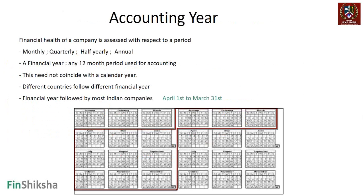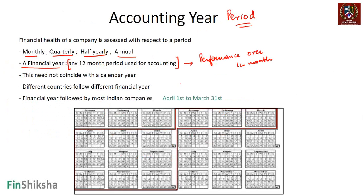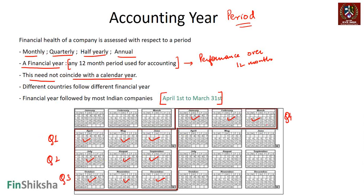When we look at the concept of the accounting year, this period could be monthly, quarterly (three months), half-yearly (six months), or annual (twelve months). A financial year is any twelve-month period used for accounting. In India, the financial year runs from April 1st to March 31st of the next year — Q1 is April–June, Q2 is July–September, Q3 is October–December, and Q4 is January–March.